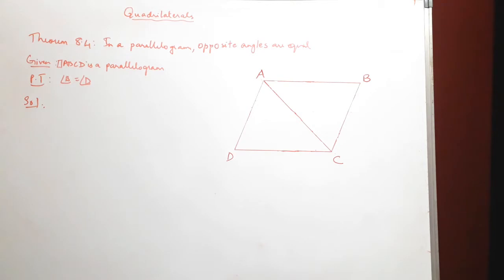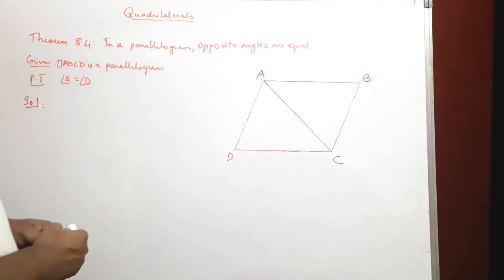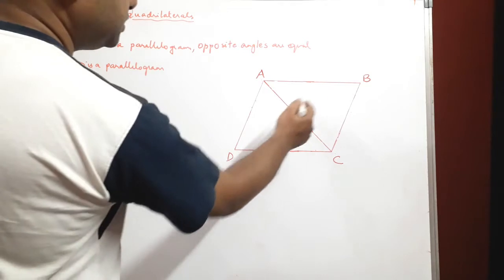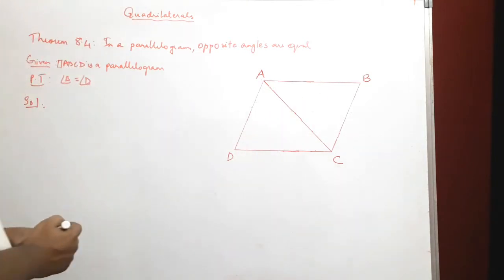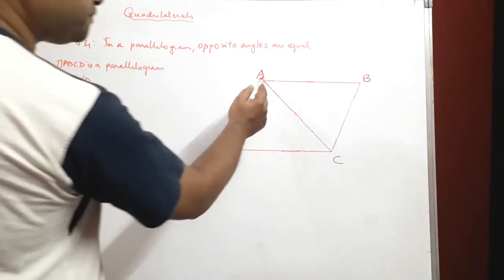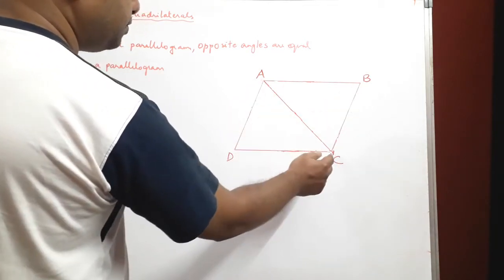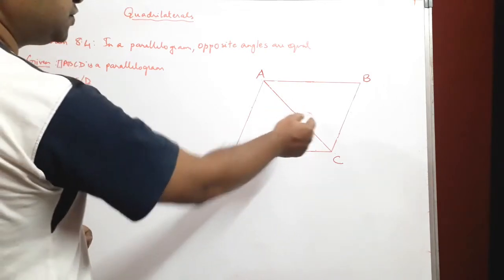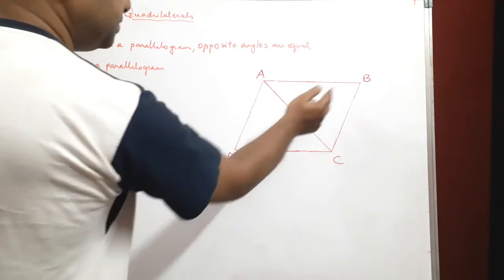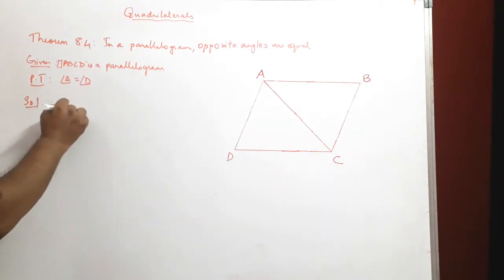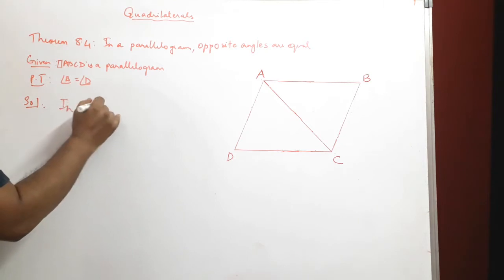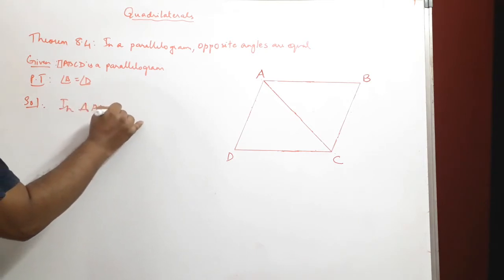To prove this, we have been given a parallelogram ABCD and asked to prove that angle B is equal to angle D. What we'll try to do is get two triangles congruent to each other — that is, triangle ABC congruent to triangle CDA. Once we get these two triangles congruent, we can say angle B is equal to angle D.